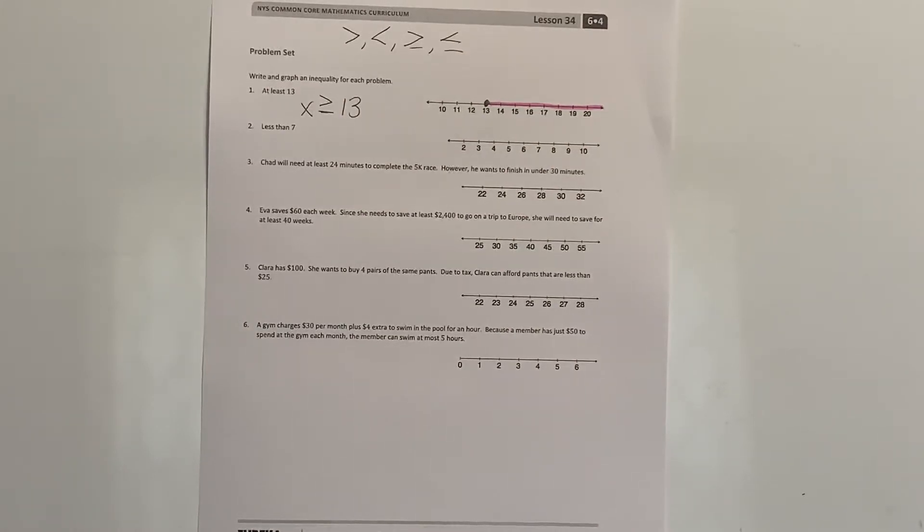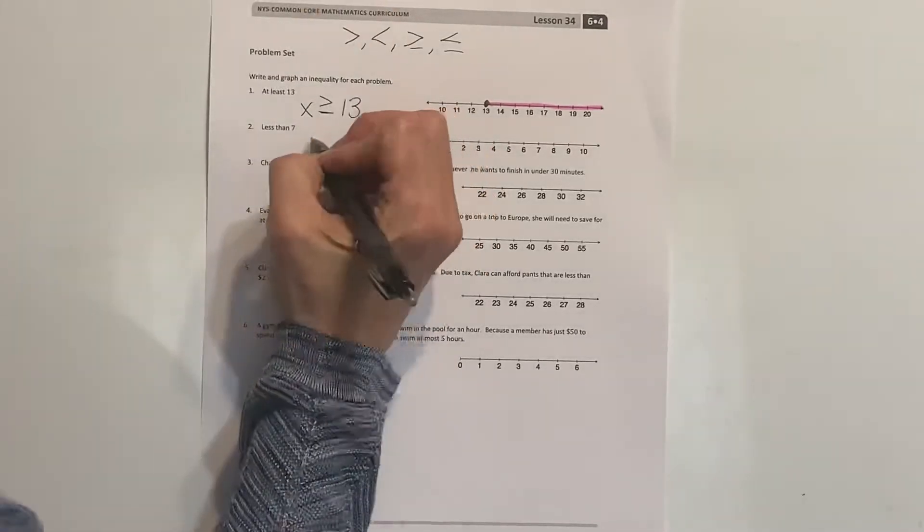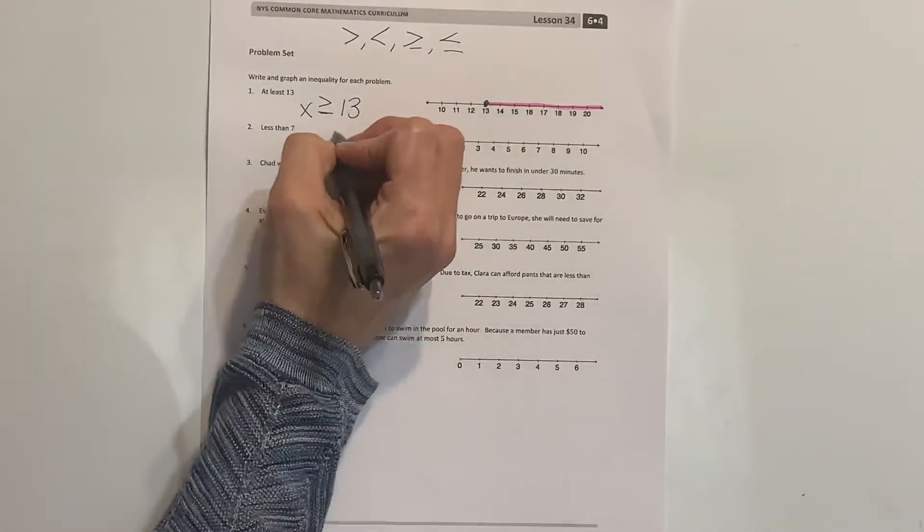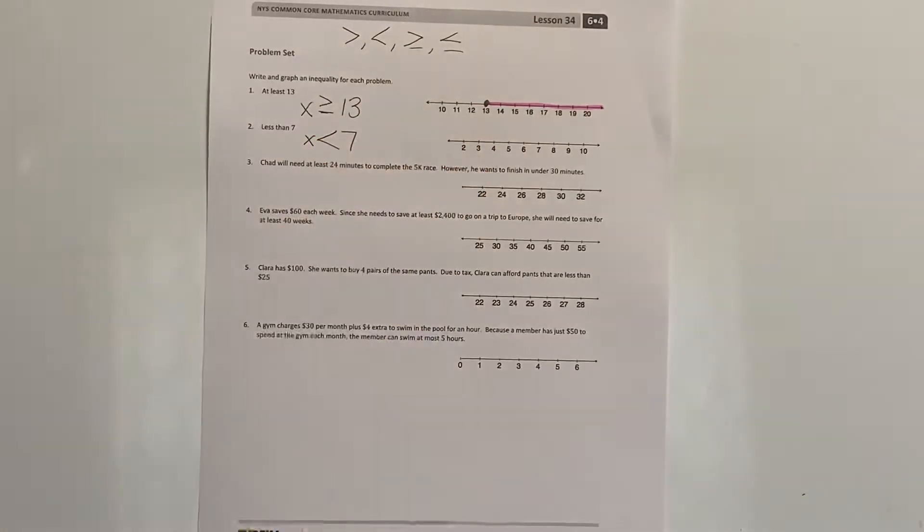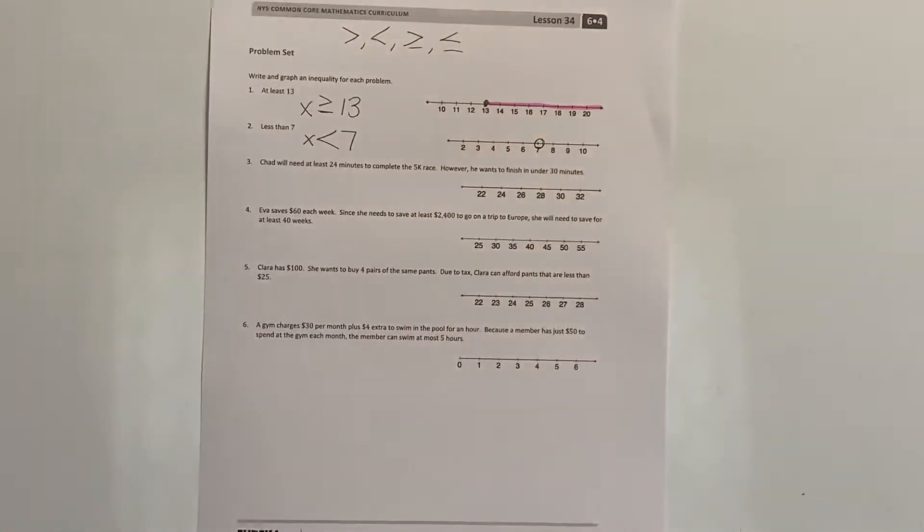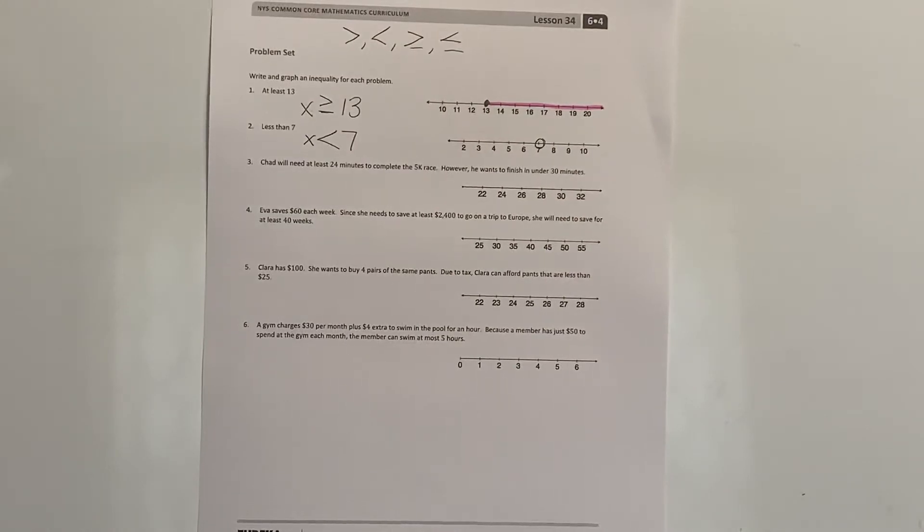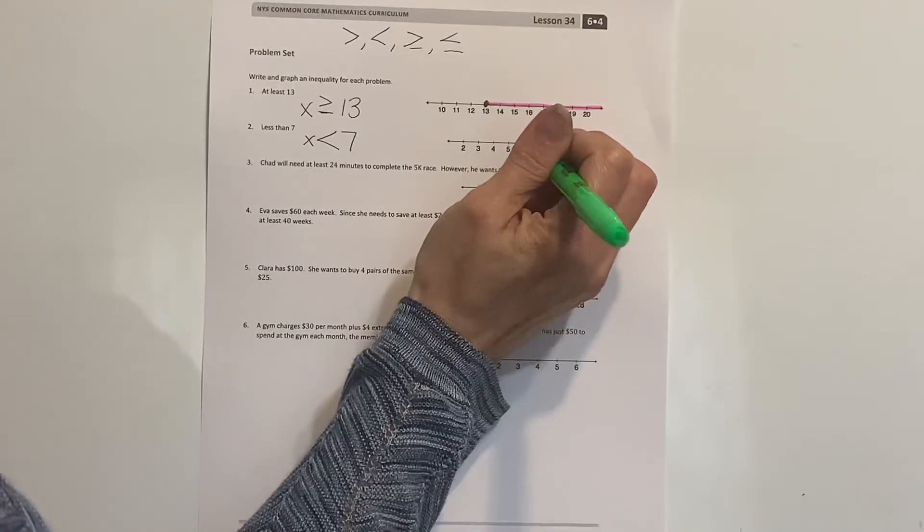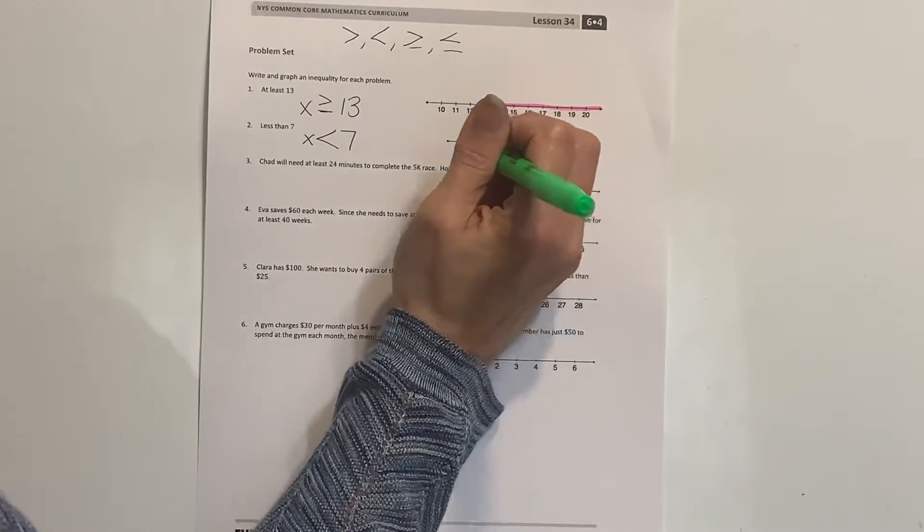For the next one, it says less than 7. It doesn't say at least, it just says less than 7. So we've got our unknown and it is less than 7. Does it include 7? It doesn't say that it includes 7, so it is an open circle. Less than 7, the line is going to go to the left to include the numbers that are smaller than 7.